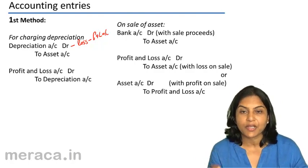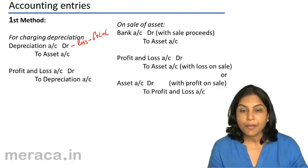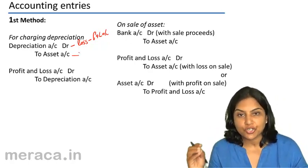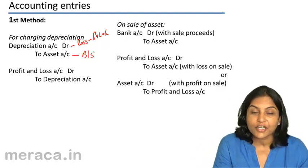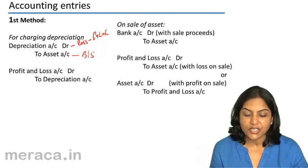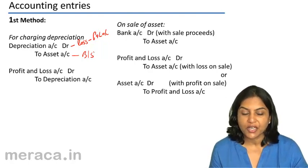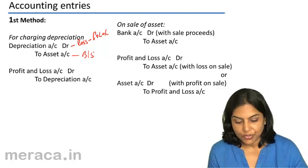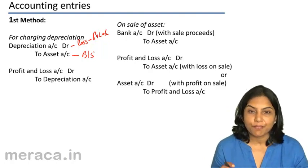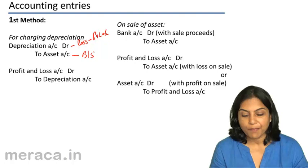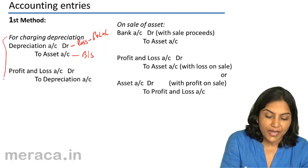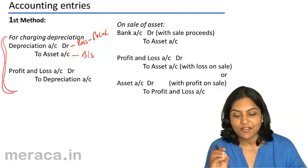Depreciation account is debited because it is a loss in the value of an asset. Because the value of the asset is reduced, the asset account is also reduced. When the asset is displayed in the balance sheet, it would be at a reduced value after deducting depreciation. So the first entry for charging depreciation every year is depreciation account debit to asset account. Then, profit and loss account debit to depreciation account, because depreciation is an expense and is charged to profit and loss. So the depreciation account is closed by transfer to the profit and loss account.